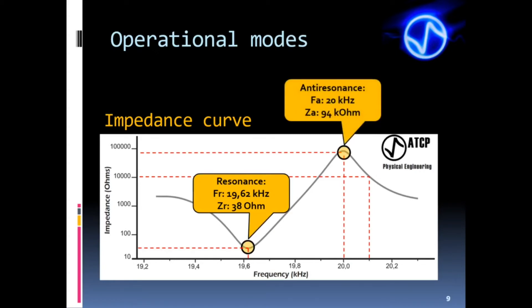The parameters at these points are known as resonance frequency Fr, resonance impedance Zr, anti-resonance frequency Fa, and anti-resonance impedance Za. The resonance impedance Zr is the value of the lowest impedance that the stack offers.